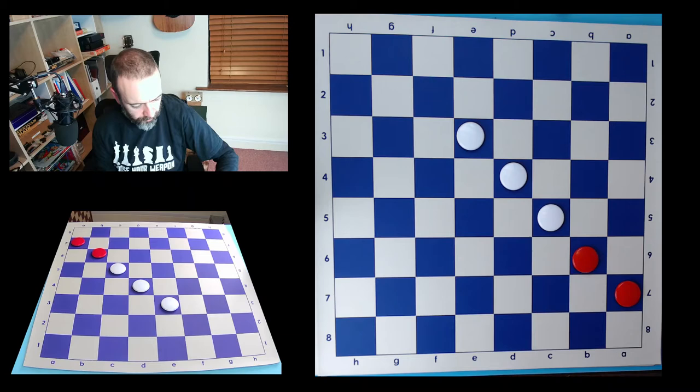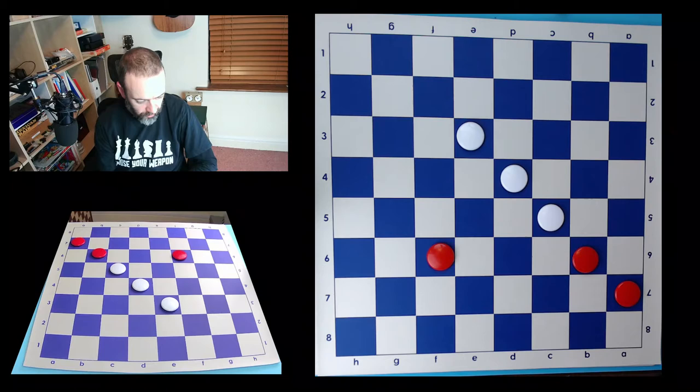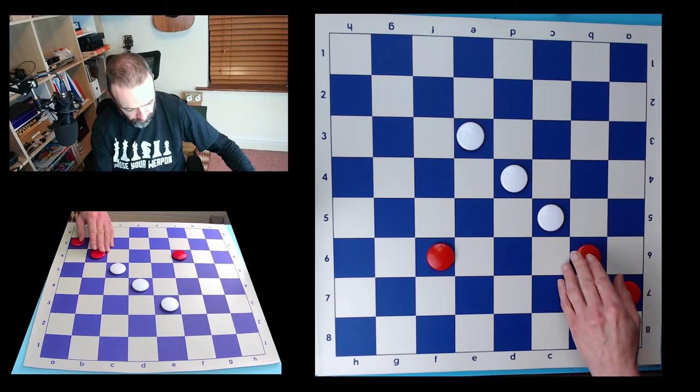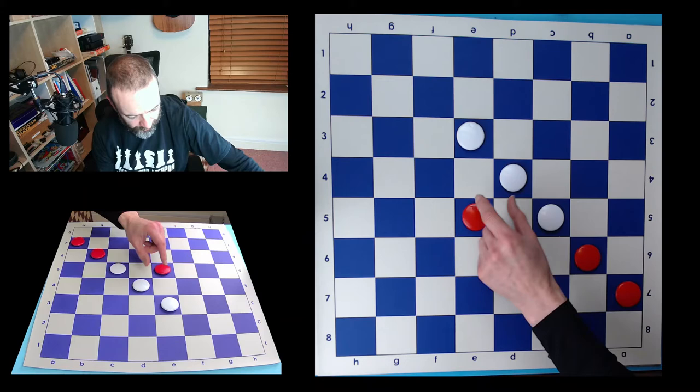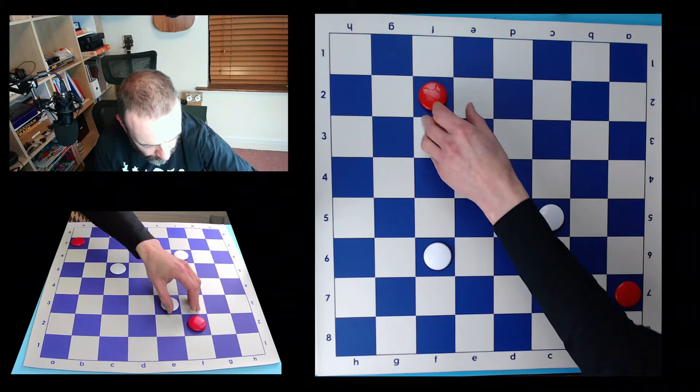The same idea works when the arm, if you like, is straight. When there's three pieces together in a row like this, and we have pressure against the three pieces. At the moment they're safe. But if we can pop a hole in that line of three by forcing a capture, then we win two pieces.